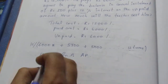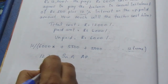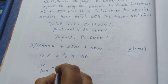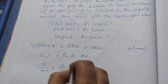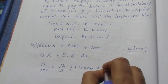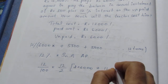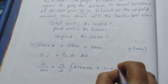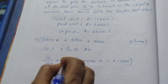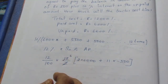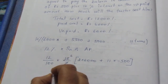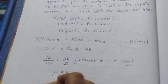The first term A is 6,000. We apply: 12 by 100 into N by 2 times (2A plus (N minus 1) times D). Here N is 12, so 12 by 2 is 6. We have 2A plus 11 times D, where D is minus 500. This gives us 12 by 2 into (2 times 6,000 plus 11 times minus 500).